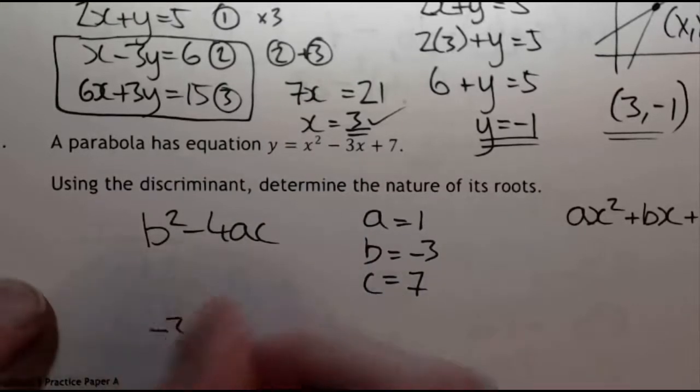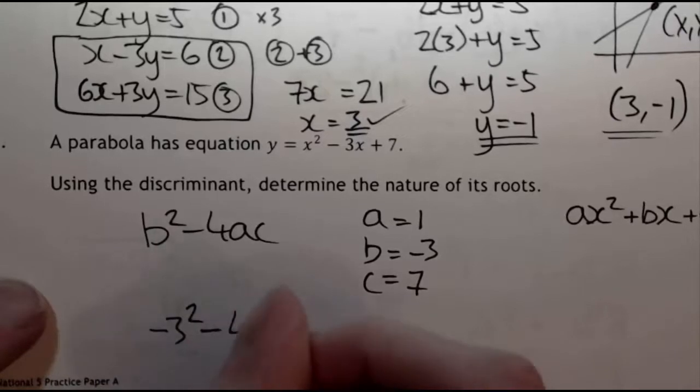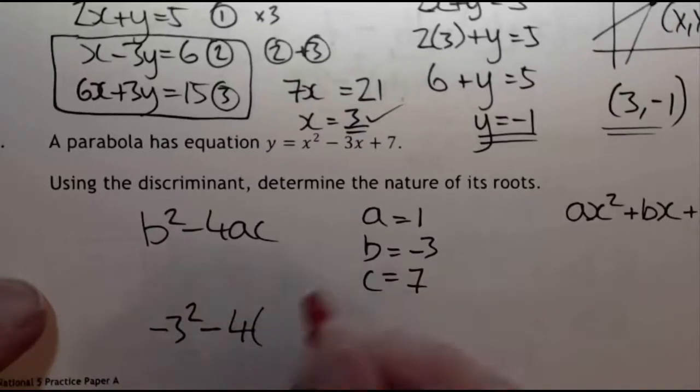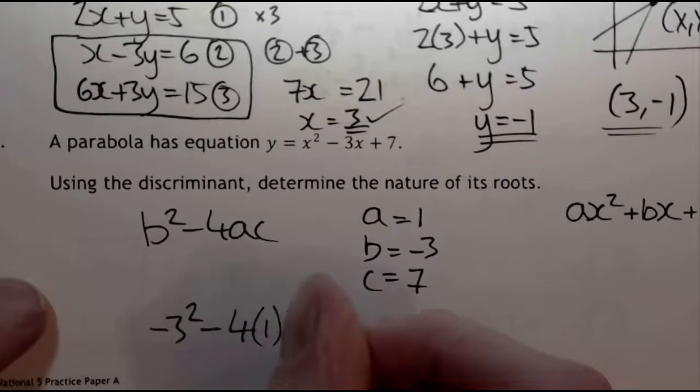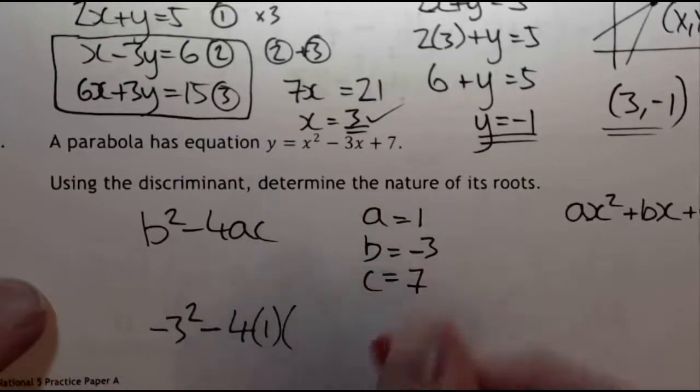So what we have to do is plug these numbers in. That's minus 3 squared minus 4 times 1 times 7.